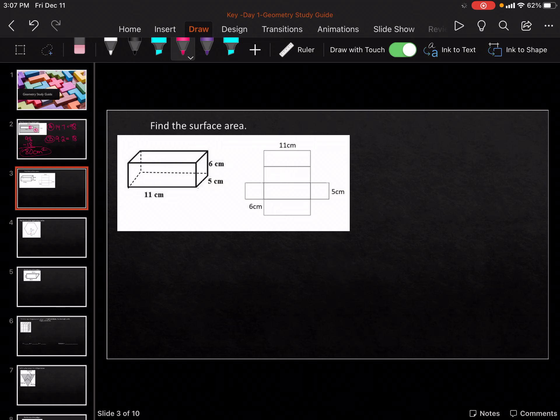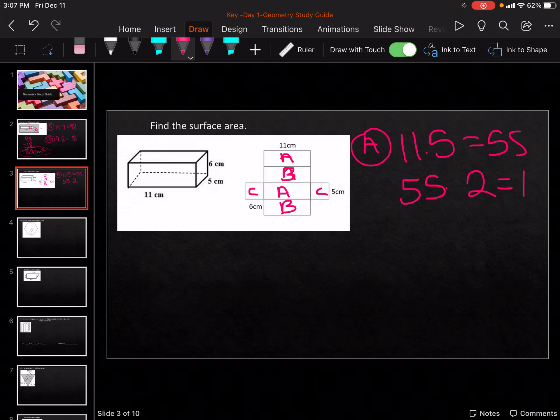Okay, so for this one it's going to be surface area. We've got A, B, A, B, C, C. So for A, it's going to be 11 times 5, which is 55. And then 55 times 2, which is 110.